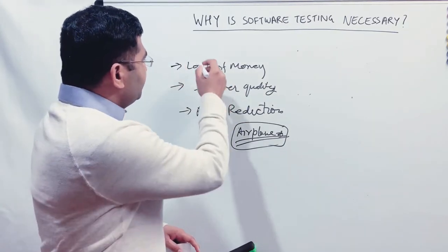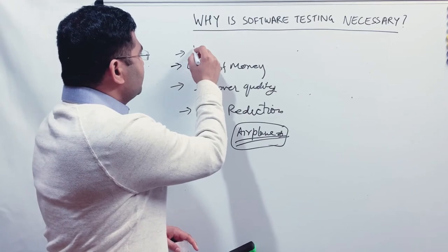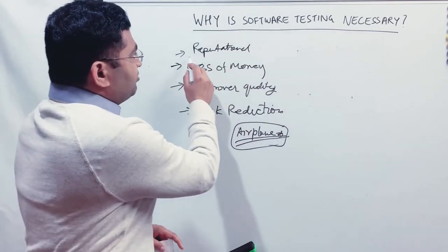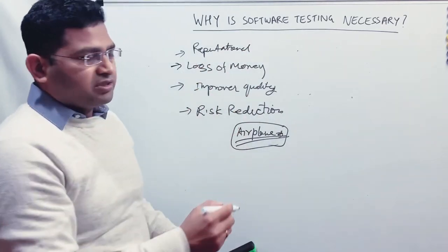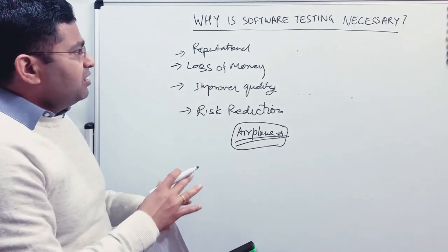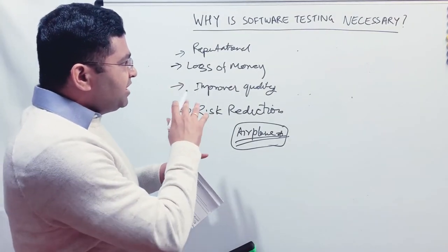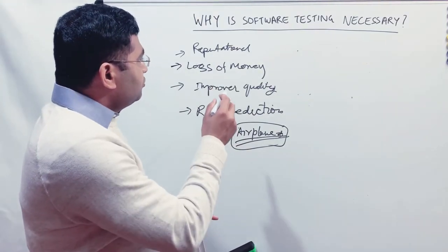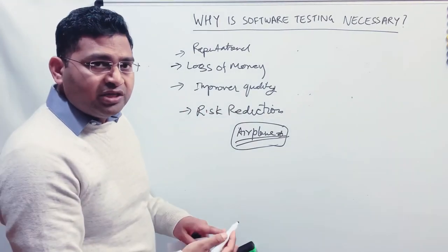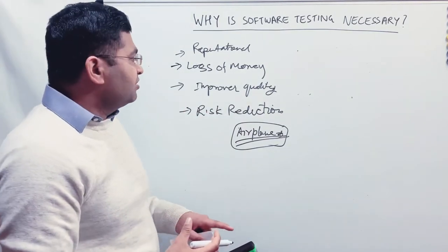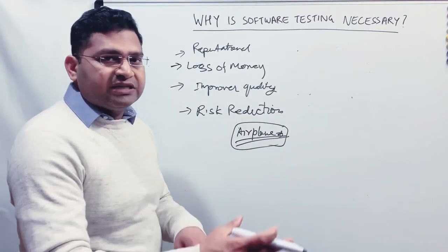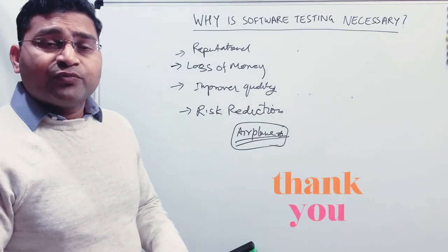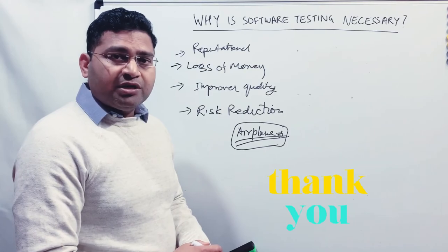So these are some of the key things that you need to remember. So basically, reputational damage, reputation, loss of money, improved quality and risk reduction. These are some of the key things that are main towards why the software testing becomes very necessary, in order to ensure that there is no reputational damage, no loss of money, and you find the bugs upfront, rather than waiting for the bugs in the later phases of the software delivery. So that's all for this tutorial. Hope it was helpful. Please do share and subscribe. And thank you for watching.